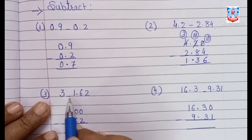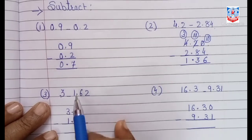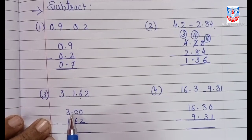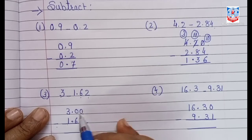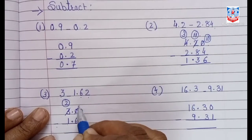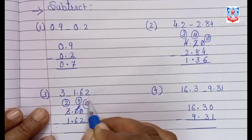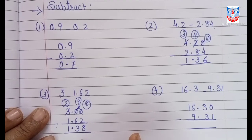Next, 3 minus 1.62: since 3 has no decimal part, write it as 3.00. Now 3.00 minus 1.62: in the hundredths column, borrow — 10 minus 2 is 8. Borrow again for the tenths — 9 minus 6 is 3. Place the decimal point. 2 minus 1 is 1 — so the answer is 1.38.